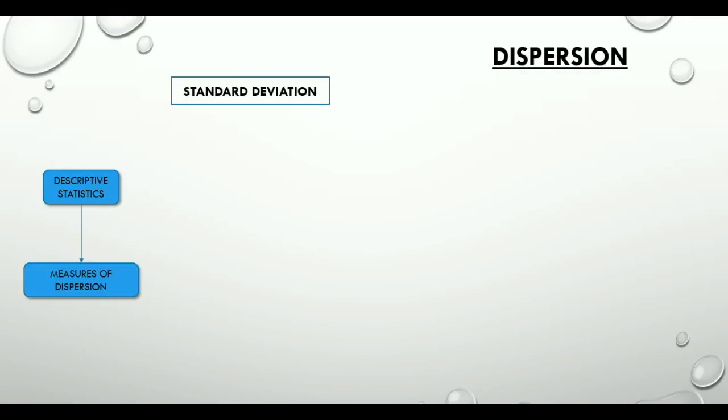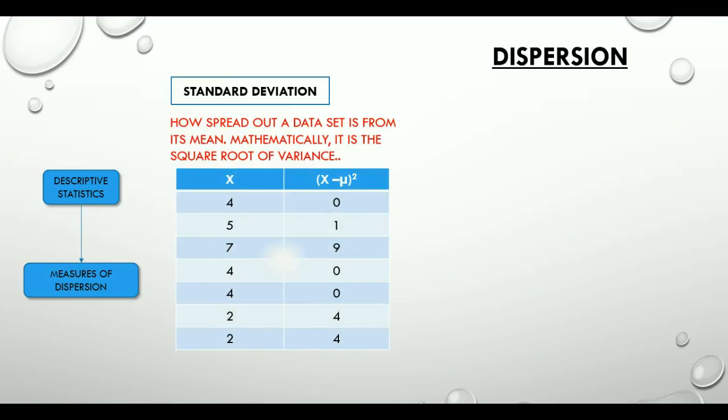The third measure of dispersion is standard deviation, probably the most talked about topic in statistics, quality control, and process excellence. Let's uncover the myth today related to standard deviation. Standard deviation indicates how spread out our data set is from its mean. Mathematically, it is the square root of variance. Let's look at an example here to understand it better.